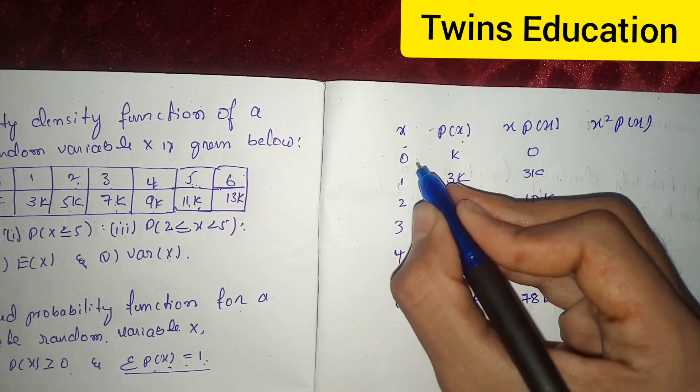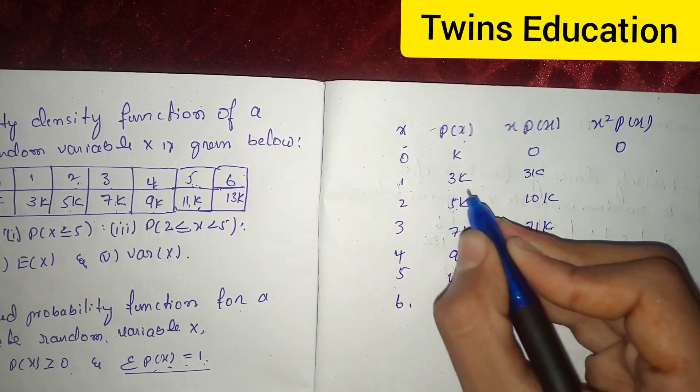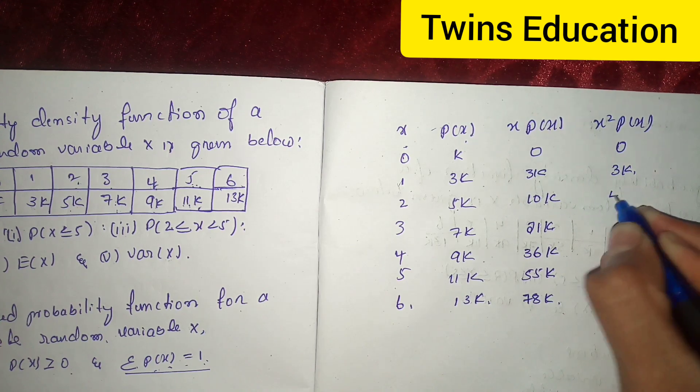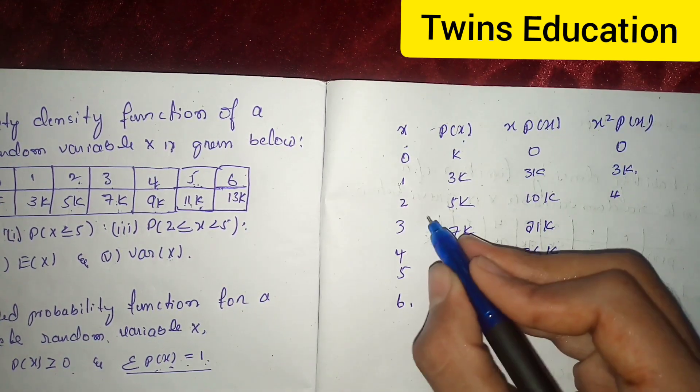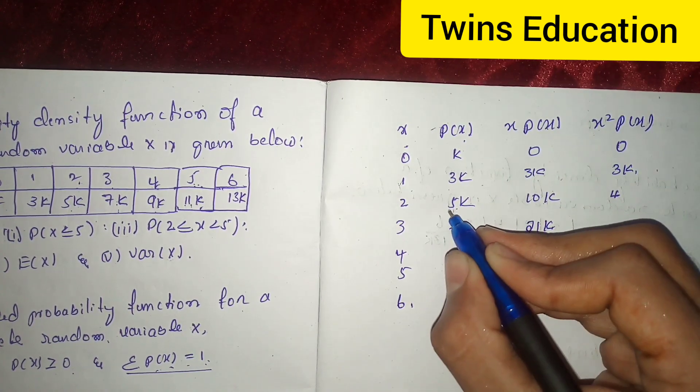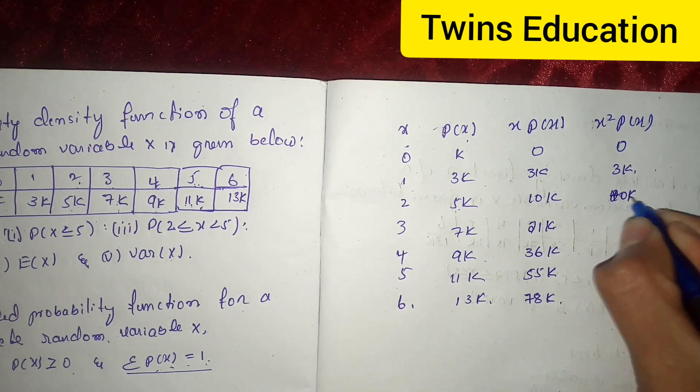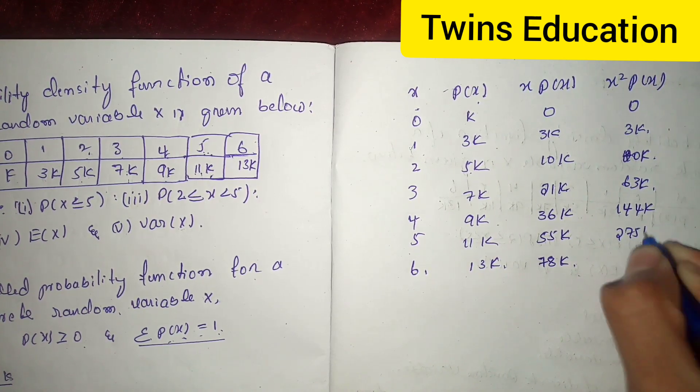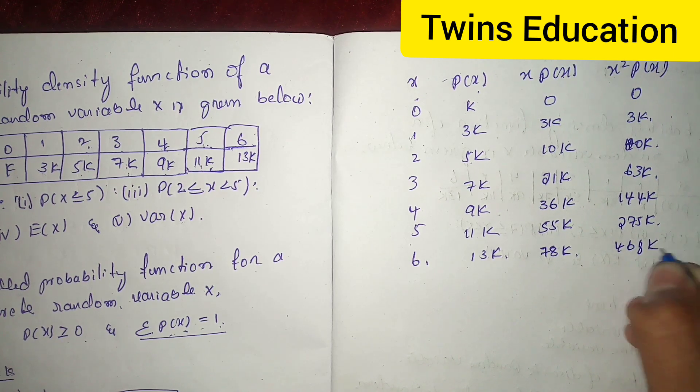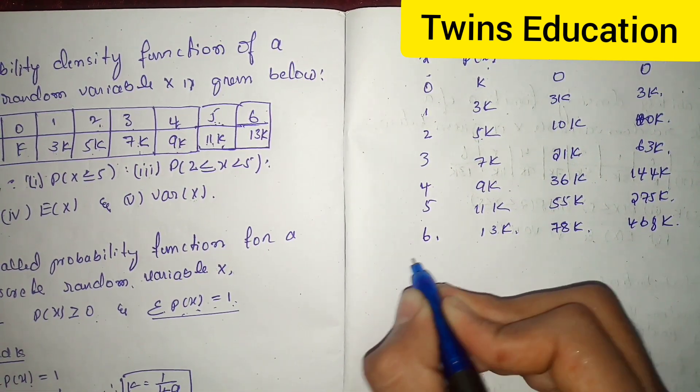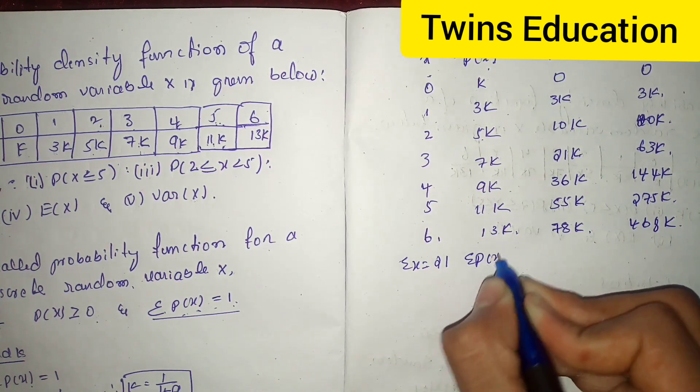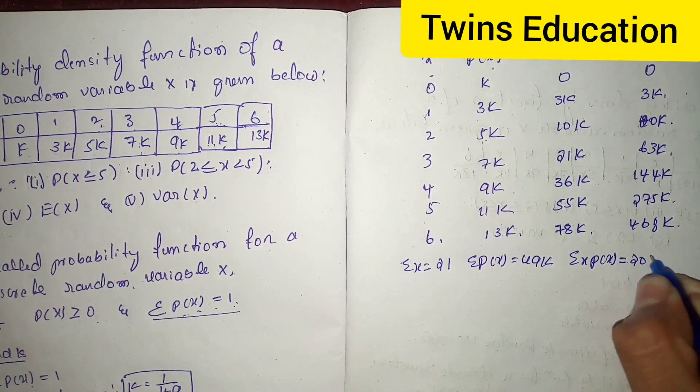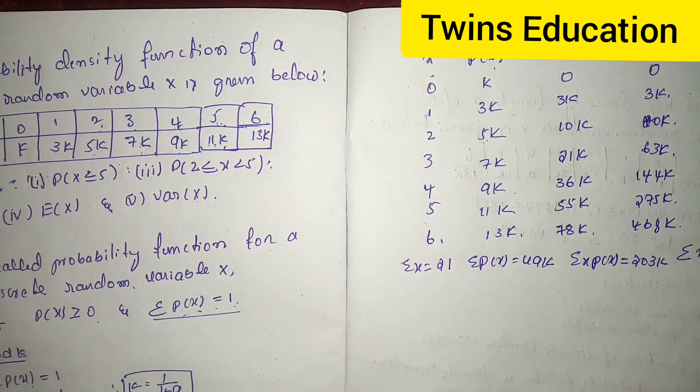Now find x square into p of x: 0, 1 into 1 into 3k is 3k, 2 square into 5k is 20k. Again, same here: 63k and 144k, 275k and 468k. Find the summation of x: 21. Summation of p of x is 49k, and summation of x into p of x is 203k, and summation of x square into p of x is 973k.